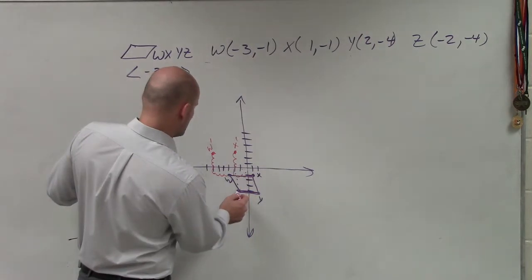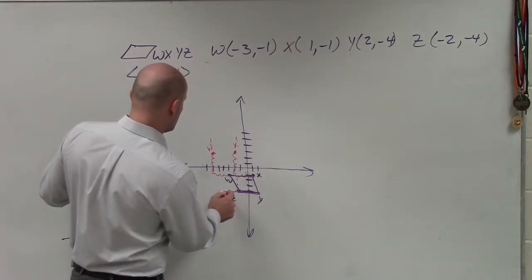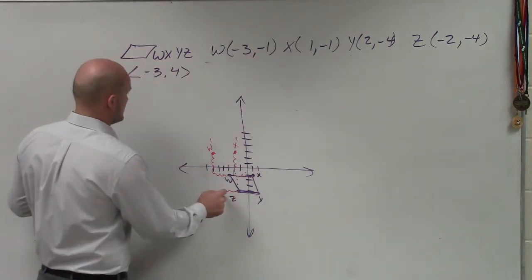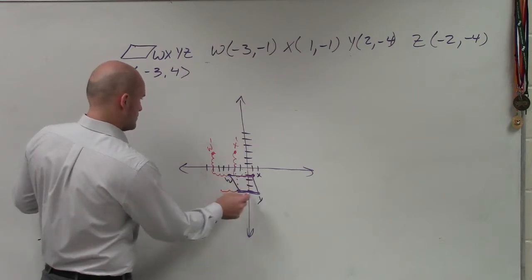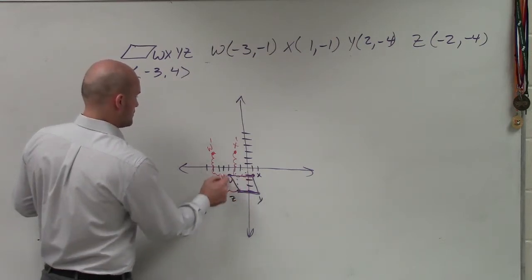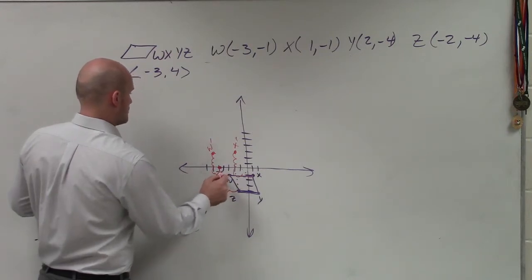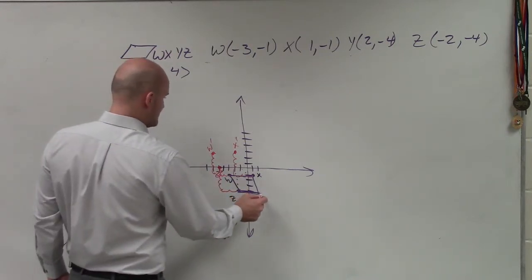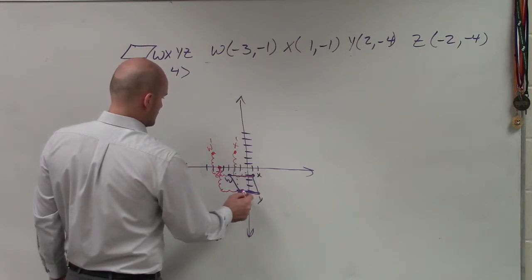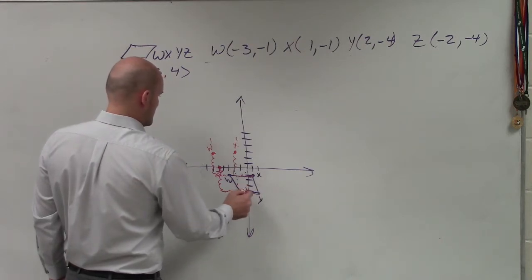Z, negative two, so that's going to be one, two, three, and then four units up. One, two, three, four. And then Y, Z would be at, or Y prime's right there. And then up four.